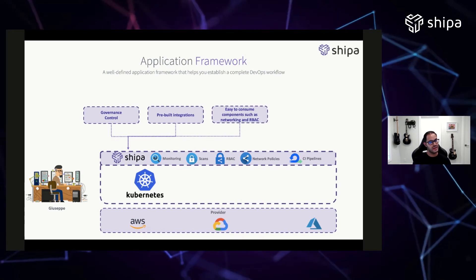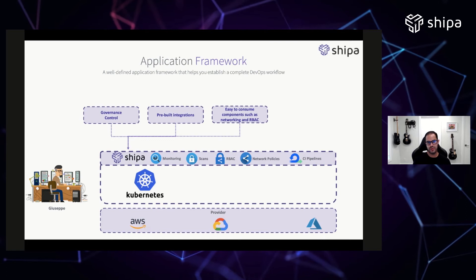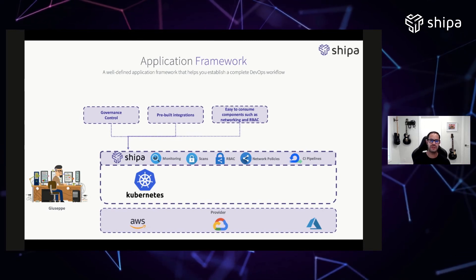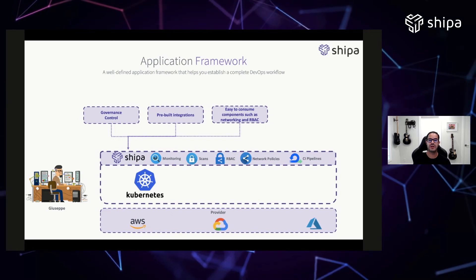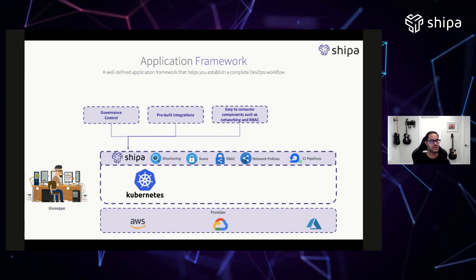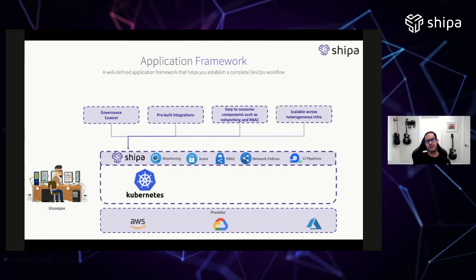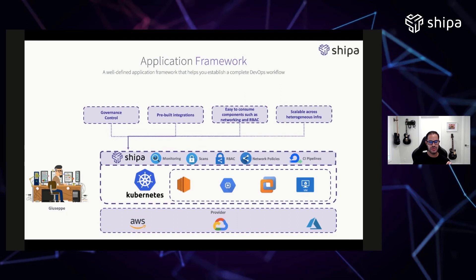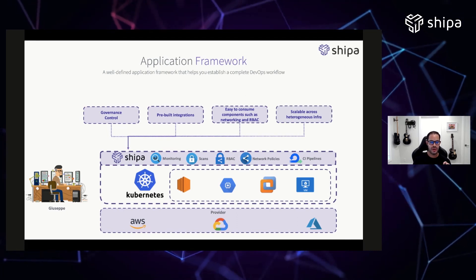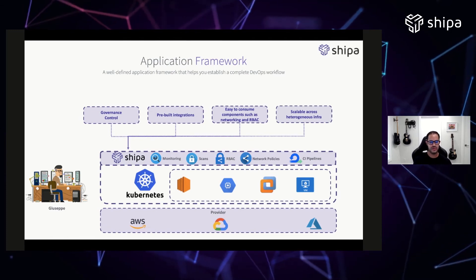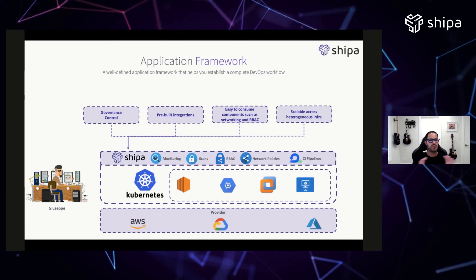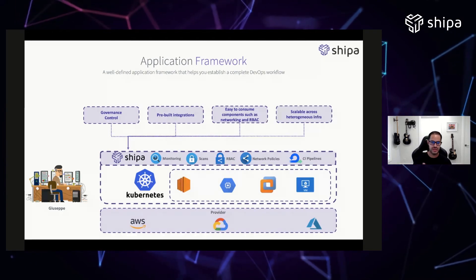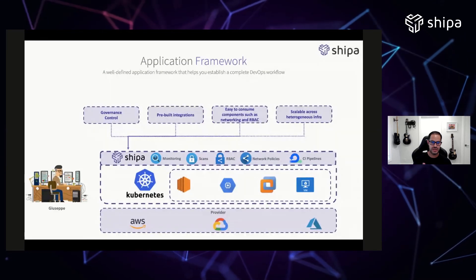He also wants to give Julie and the DevOps team easy-to-consume components — network policies on Kubernetes are extremely complicated, especially when giving developers some functionalities around them. He needs to give Julie something easy to consume. Giuseppe also understands he has existing infrastructure, so the framework needs to lay on top of existing infrastructure whether it's a VM, EC2, or Google or Azure VM — applying governance and controls across whatever infrastructure he chooses without impacting Julie.